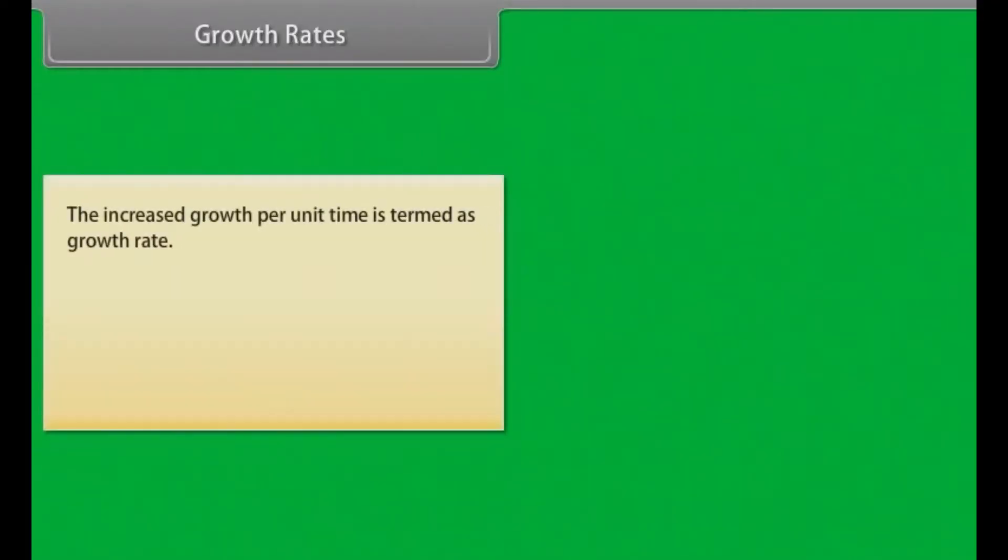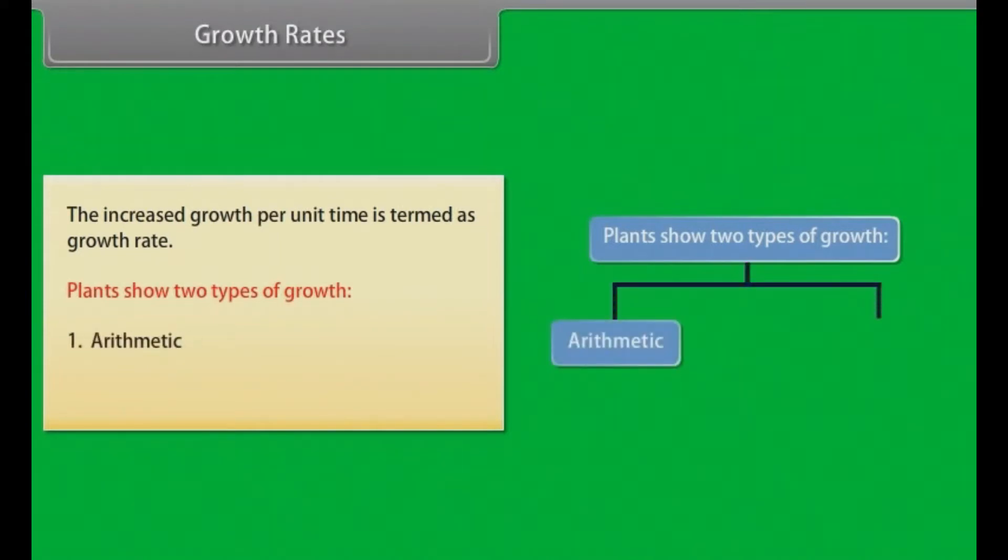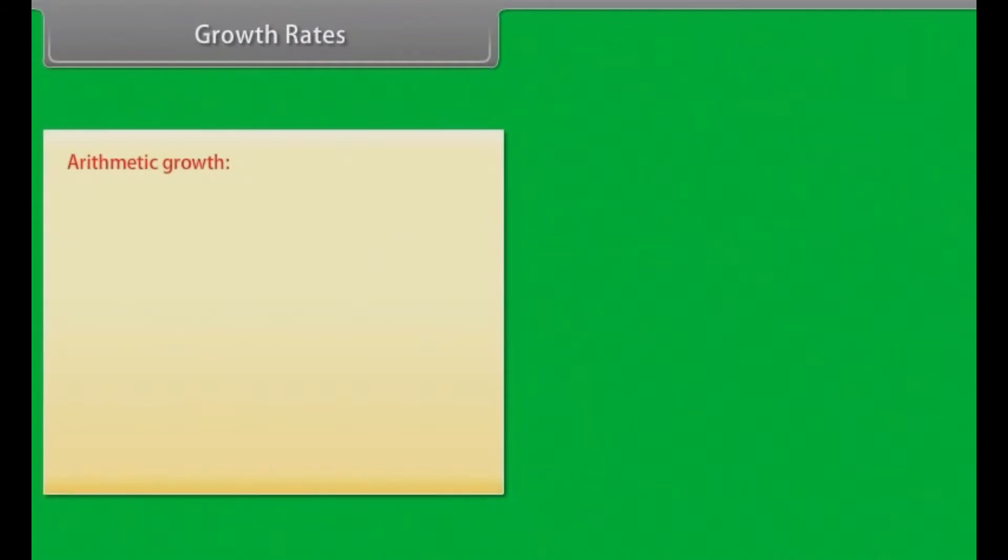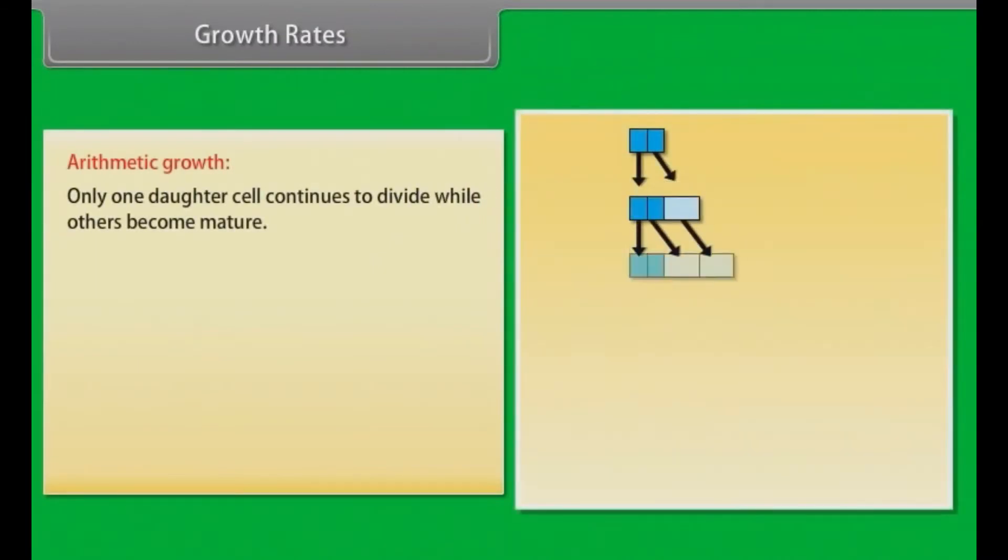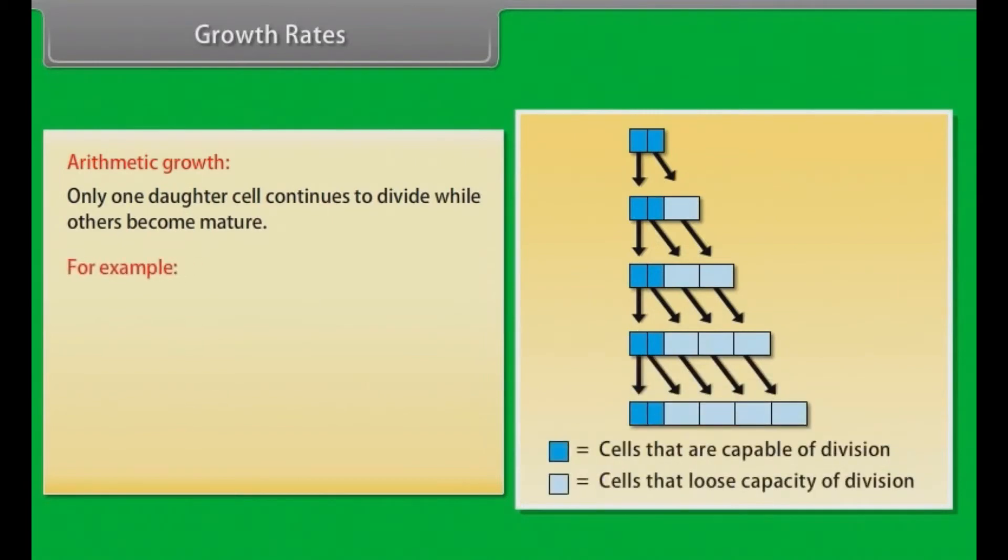Growth Rates. The increased growth per unit time is termed as growth rate. Plants show two types of growth: Arithmetic and geometric. Arithmetic growth: Only one daughter cell continues to divide while others become mature. For example, root elongating at a constant rate.